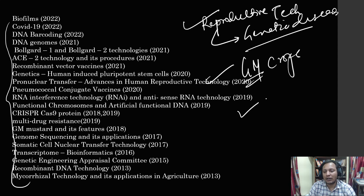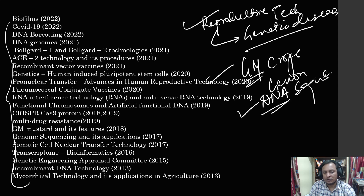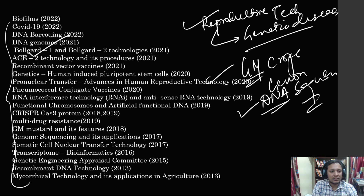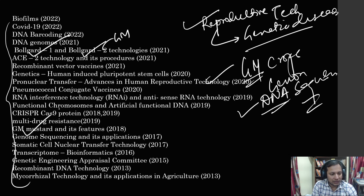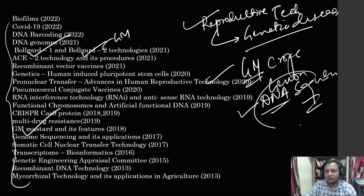The third theme is about DNA sequencing or genome sequencing. If you go through the list, you can see questions on Bollgard 1 and Bollgard 2, which are on GM technology. There are also questions on GM mustard — a lot of questions have come on genetic modification. Next, you see questions which have come on genome sequencing — a lot of questions on genome sequencing.